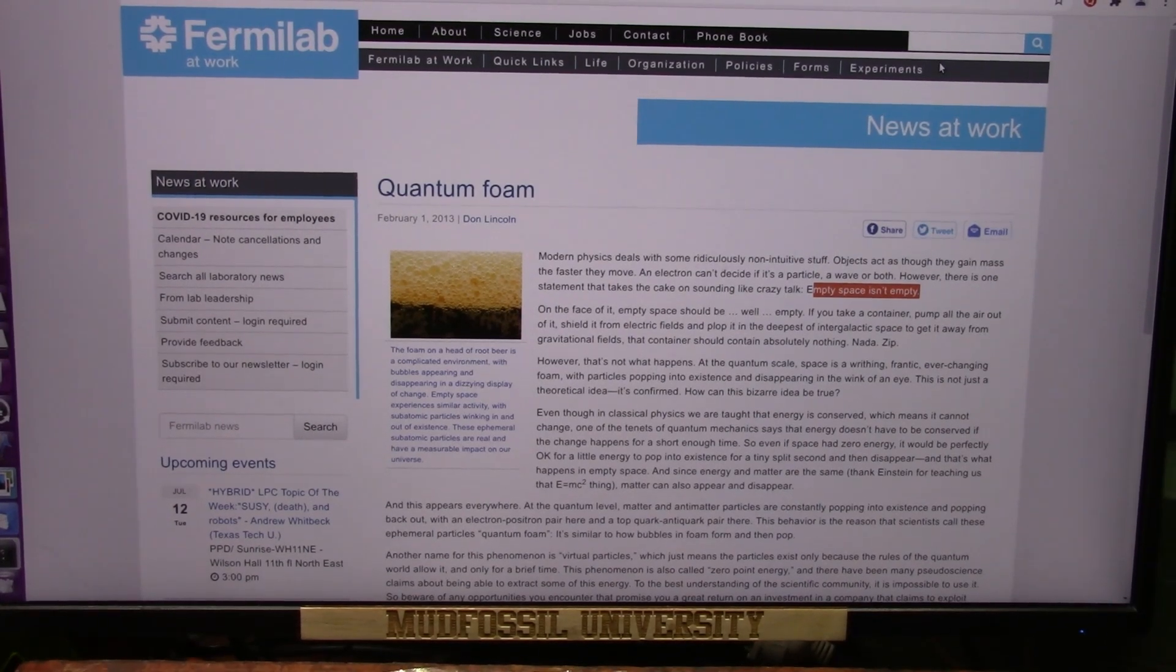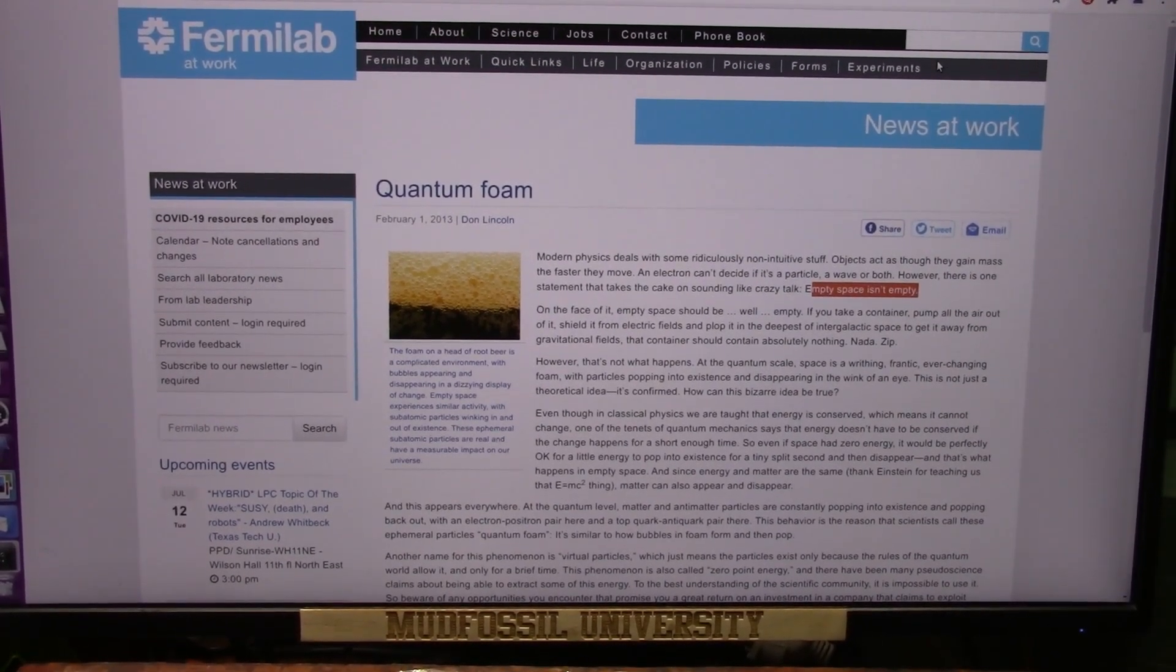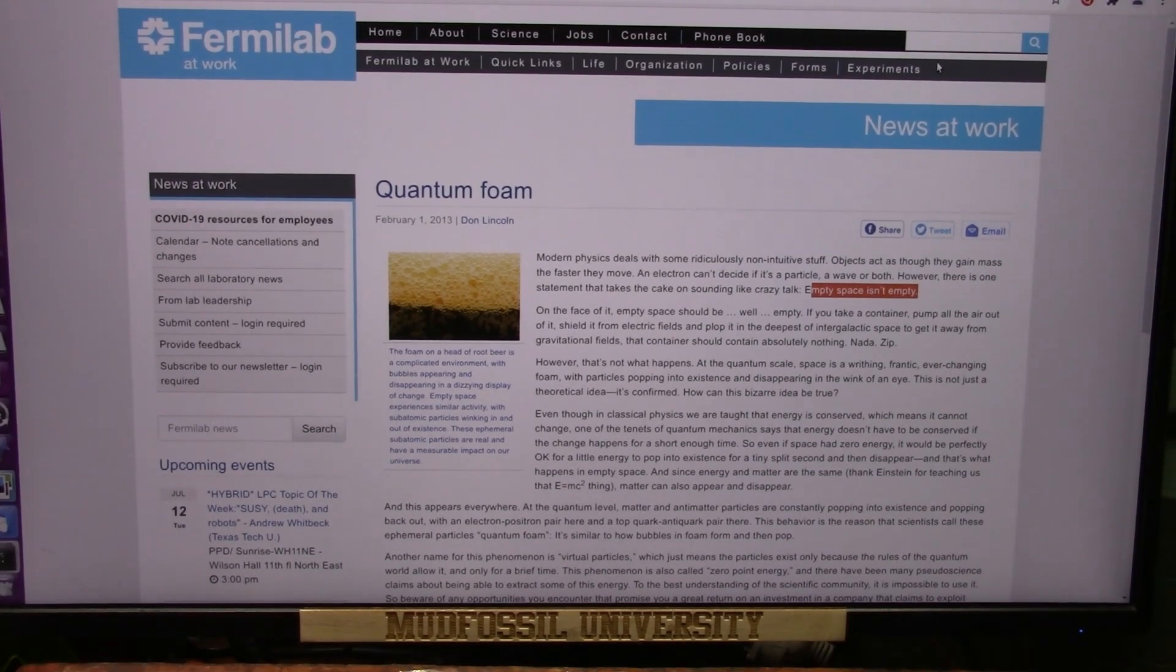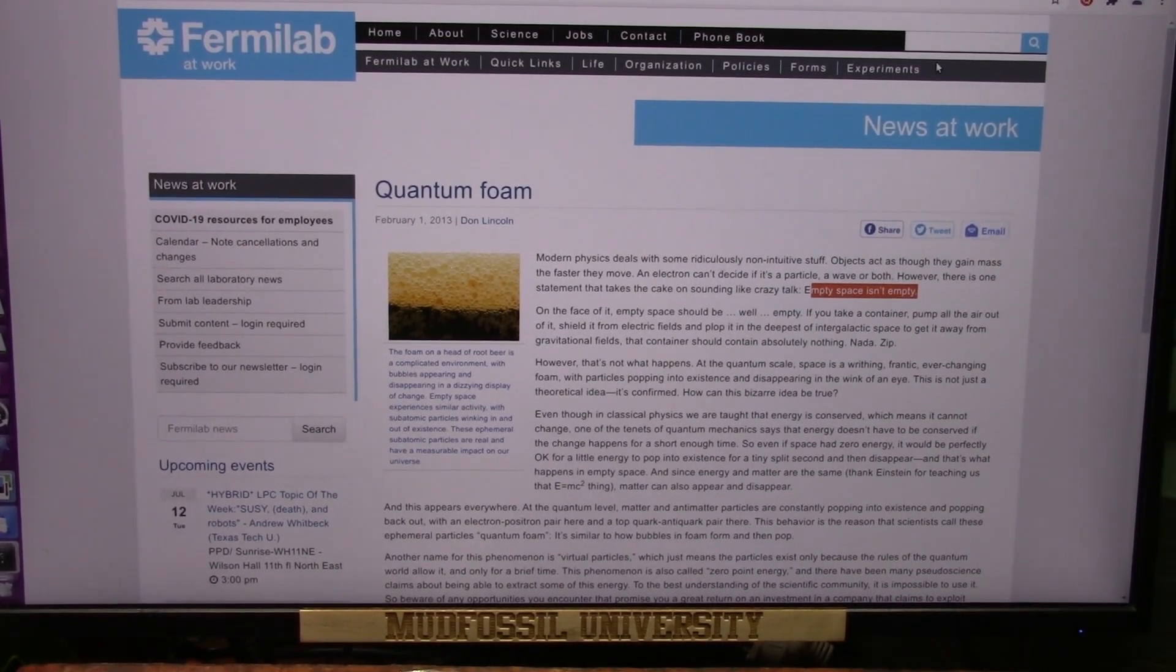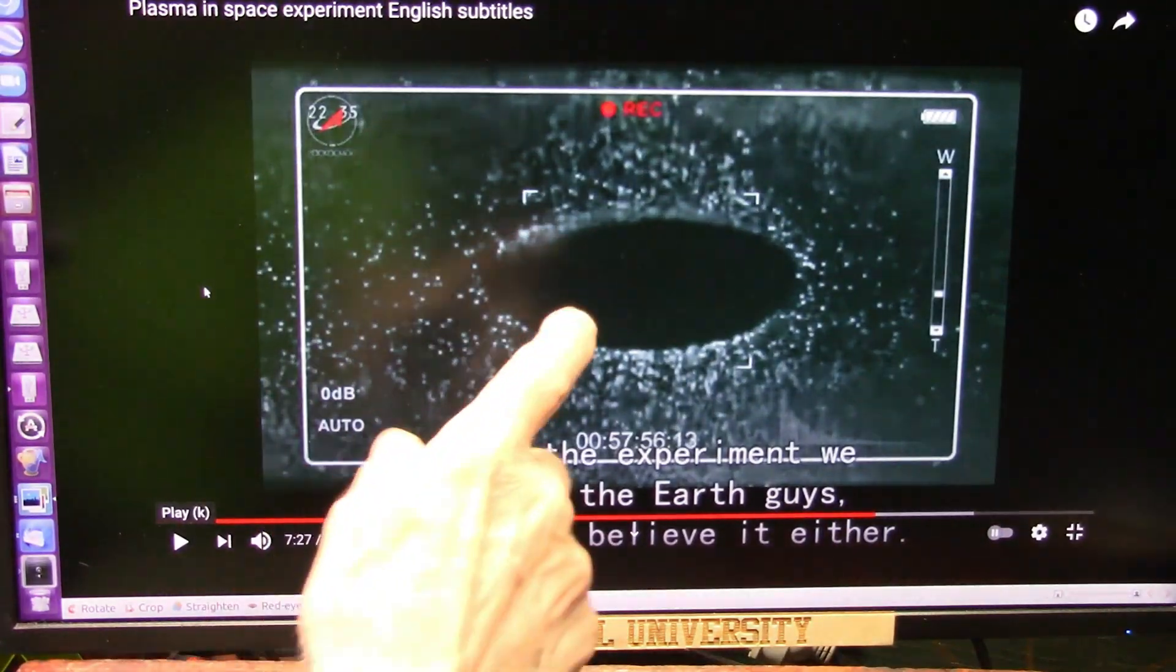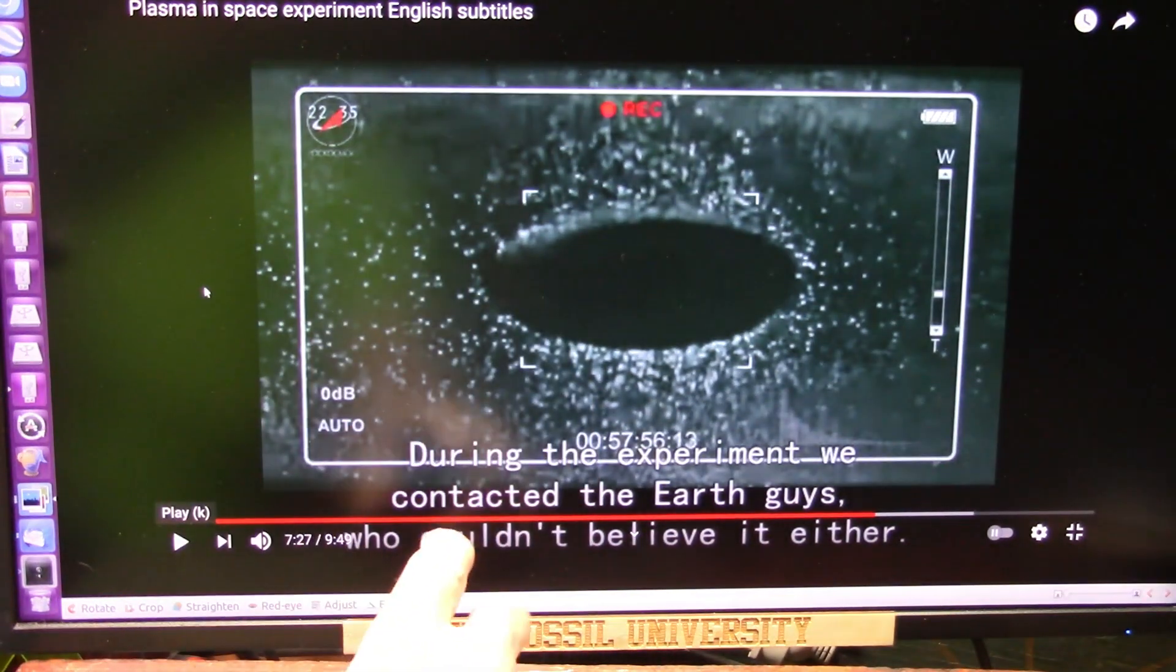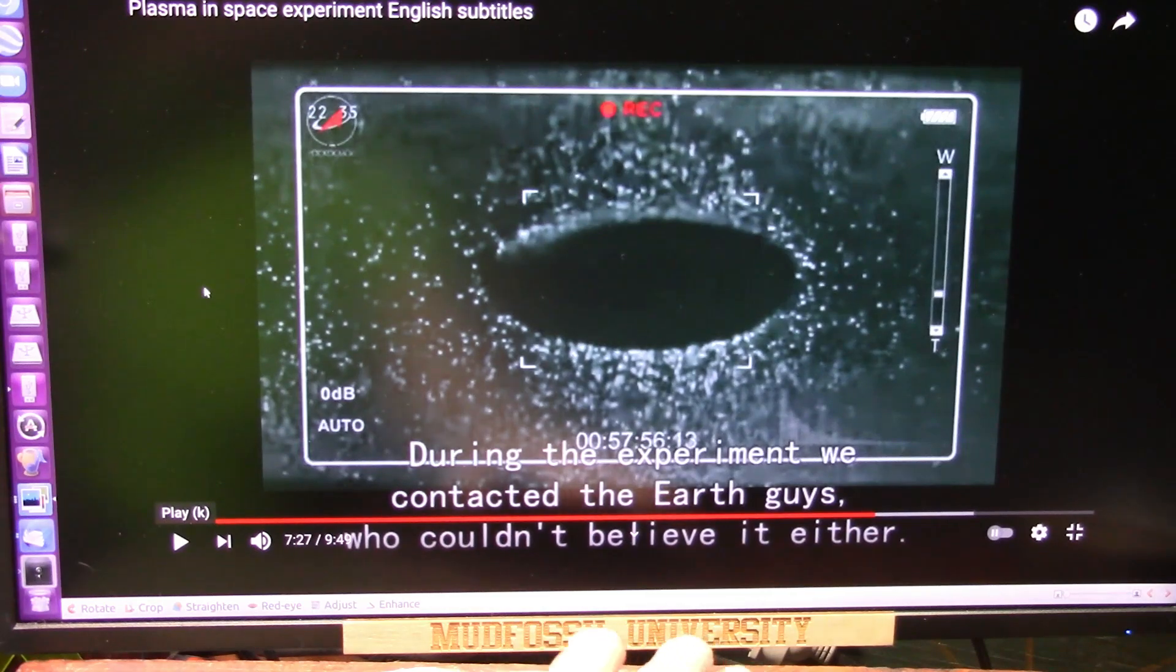Let me show you the particles leaving the sun and invading the universe, which is any extremely radiative source will lose its electrons instead of bringing them back in into their field. You see that? That's exactly what my theory predicts. This is in outer space. And during this experiment, they contacted the guys on Earth who couldn't believe it either.